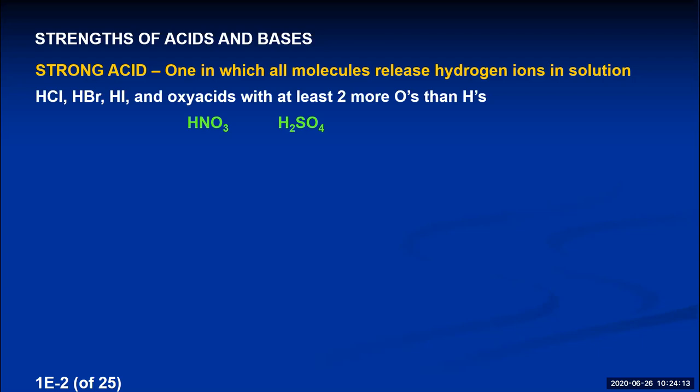Sulfuric acid has four O's and two H's — four minus two is two — so it also has two more O's than H's, making it a strong acid where all 100 molecules would ionize. Perchloric acid has three more O's than H's, making it a really strong acid.